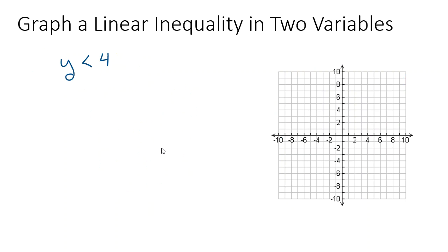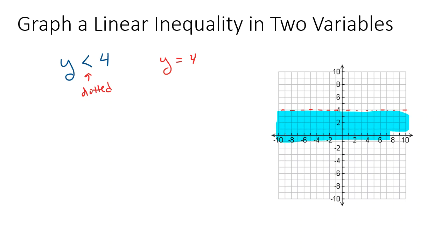What if we have something like y is less than 4? If we follow the same idea, the first thing we do is graph the line y equals 4. Since it doesn't have an equal-to part, we graph it as a dotted line. Remember, y equals 4 is a horizontal line through 4 — all points on that dotted line have a y-coordinate of 4. We want to shade all the points where the y-value is less than 4, so any point under that line is a solution.